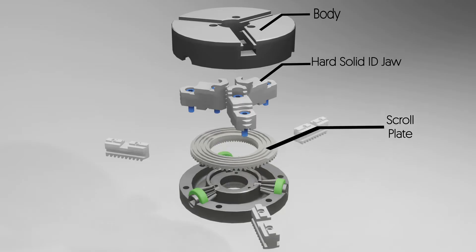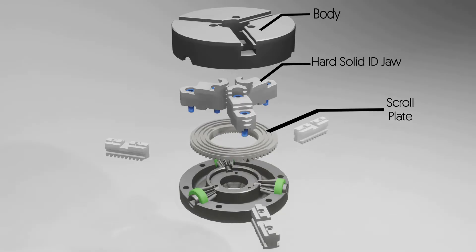Scroll plate: this is the main part of the three jaw chuck mechanism. This part contains teeth as well as a spiral, we will talk about more details later on.